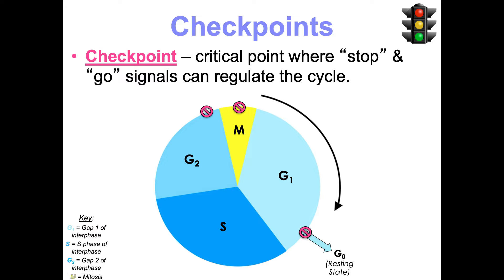There's a checkpoint during G1 that checks if there are enough nutrients and growth factors, and that there's no DNA damage before we double the DNA. The cell may also decide to go into G0, a resting state. During S phase, many checkpoints ensure replication is happening correctly. During G2, checkpoints verify the cell is big enough to divide and that there are no errors in the DNA. In mitosis, there's a checkpoint to ensure spindle fibers are attaching to chromosomes correctly and chromosomes are lining up well.